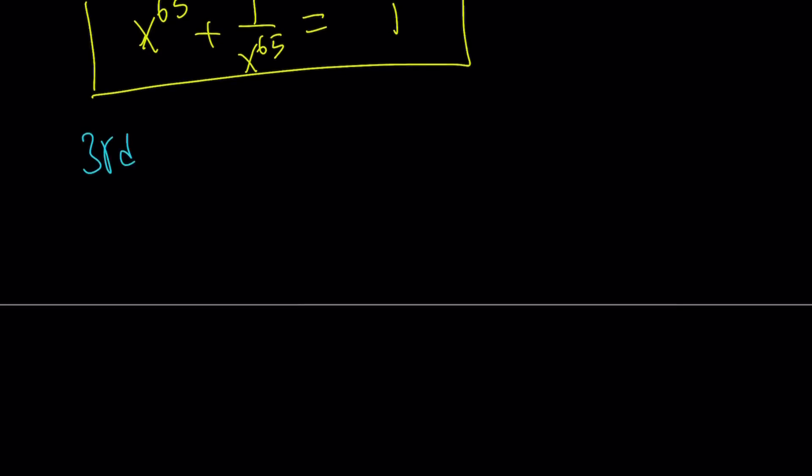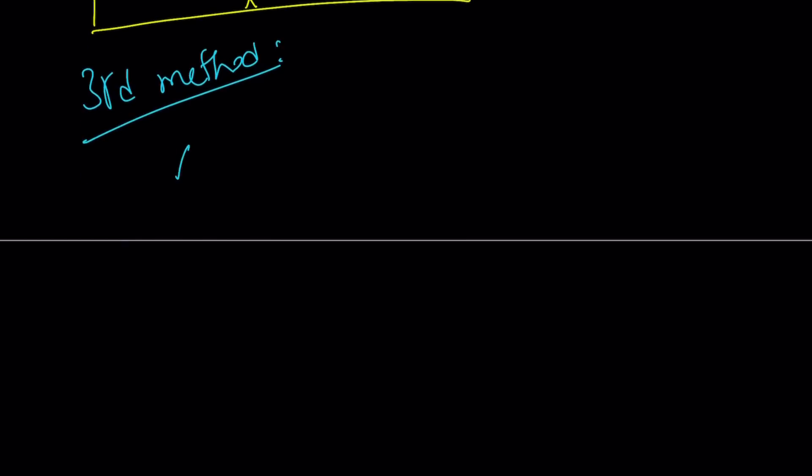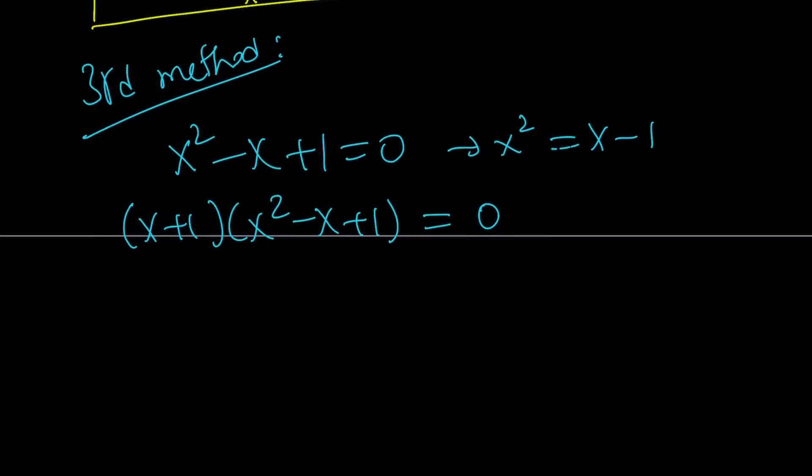And now let's talk about the third method for those of you who are even impatient with this second method. Okay, for my third method, I'm going to consider this quadratic equation. But instead of isolating x squared, which I can do definitely, right? x squared can be written as x minus 1. I'm going to do the following. Multiply both sides by x plus 1. This is a neat trick that's used very often. So don't say, hey, where does this come from? Out of the blue. We use this very often.